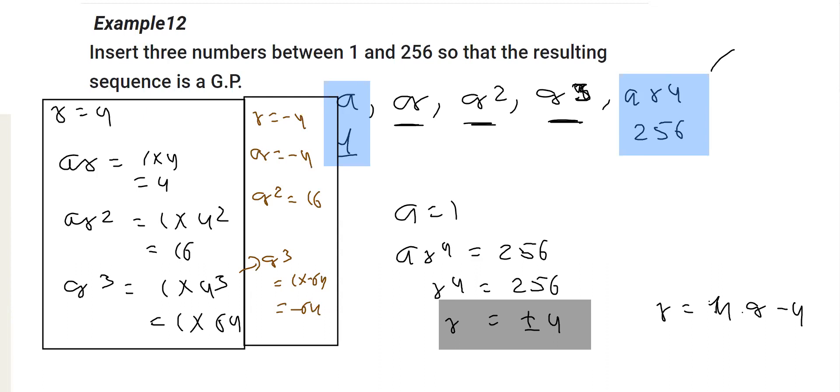So, the three possible numbers you have to write like this, the three possible numbers you may write, writing it here, three possible numbers. In this case, it is 4, 16 and 64 or this is minus 4, positive 16 and minus 64. So, this would be the final answer for this question.